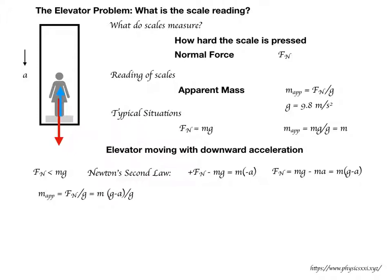The normal force equals mg minus ma, and factoring out m gives: N = m(g − a). The apparent mass, given by the scale reading divided by G, then works out to m times (g minus a) all divided by G. You'll end up with units of kilograms if you're working in the metric system, and that is the apparent mass.